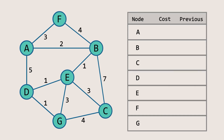Now, let's set node A as our starting point. Initially, we'll set the distance to A as zero since we're starting from there, and we'll mark all other nodes with infinity to indicate that they are currently unreachable.